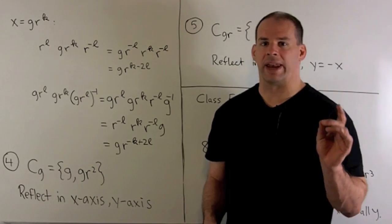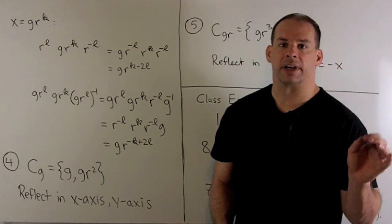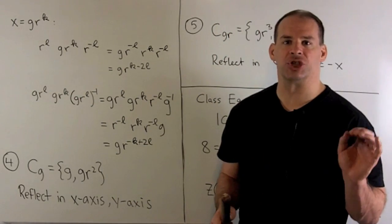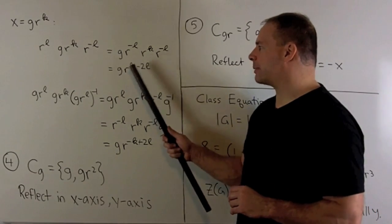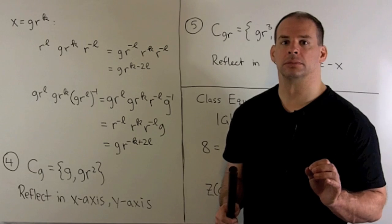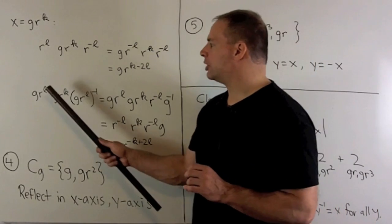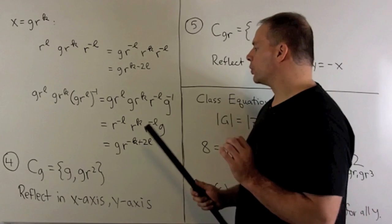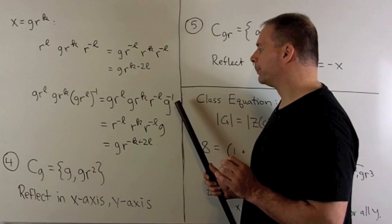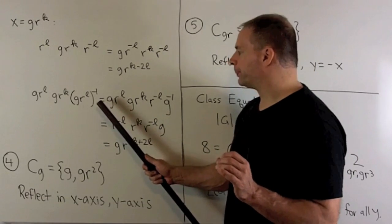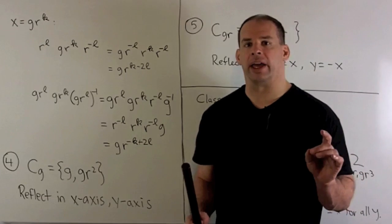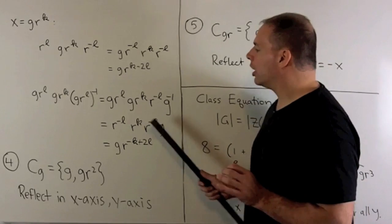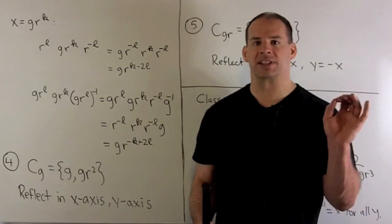Now let's consider reflections. We'll let X equal G times R to the k. If I conjugate by a rotation R to the l, we take our G and push it to the left — the penalty is to change R to the l to R to the minus l — and we're left with G times R to the k minus two l. If we conjugate by another reflection, G times R to the l, we take the inverse of that — putting the inverse on each term and reversing the order — we get R to the minus l times G inverse, but G inverse is just G. We take the second G and push it to the left, changing R to the l to R to the minus l, and the G's go away. So what we're left with is G times R to the k minus two l, and then pushing the G all the way to the left gives G times R to the minus k plus two l.